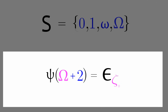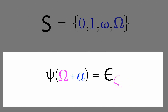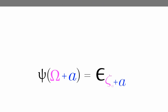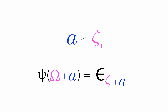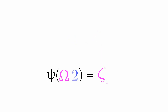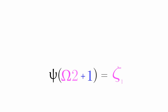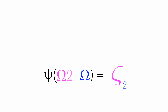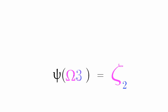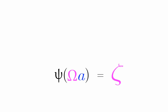If we have Psi of omega plus 2, this will be epsilon zeta naught plus 2. If we do Psi of omega plus A, this is equal to epsilon zeta naught plus A. But this only works when A is less than zeta 1. So we add another capital omega to create zeta 1. If we do Psi of omega times 2 plus 1, we will have epsilon zeta 1 plus 1. If we add another omega, this will create zeta 2, which can also be written as omega times 3. If we do Psi of omega times A, this will be zeta A minus 1. If we multiply by omega, we get omega squared, which is also equal to eta naught.